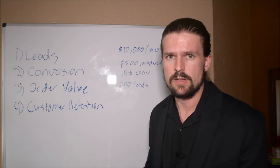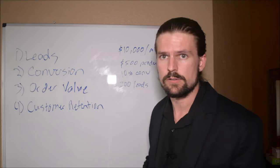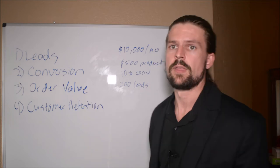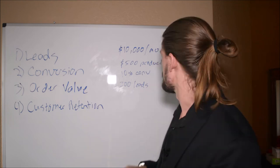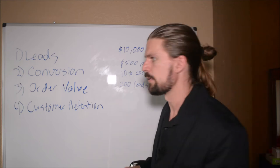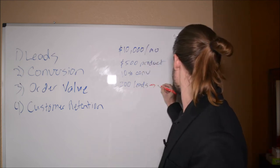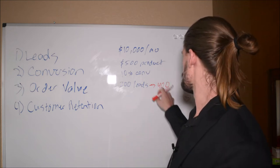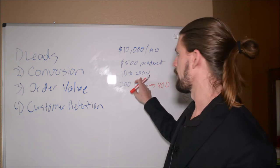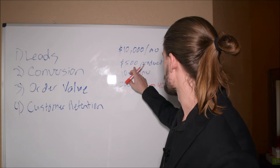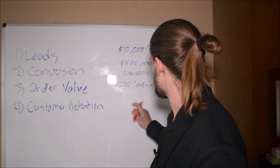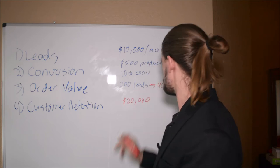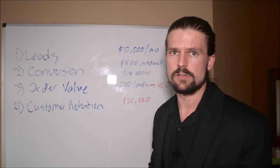I'm showing you in a hypothetical situation what a huge impact this can make. So let's look at what happens if we improve each of these four variables. Let's say you can double the number of leads coming into your business — so instead of 200, you now get 400. That gives you 400 leads times 10% conversion, which means 40 sales times $500. Your monthly revenue has gone from $10,000 to $20,000. If you double your leads, you double your revenue.